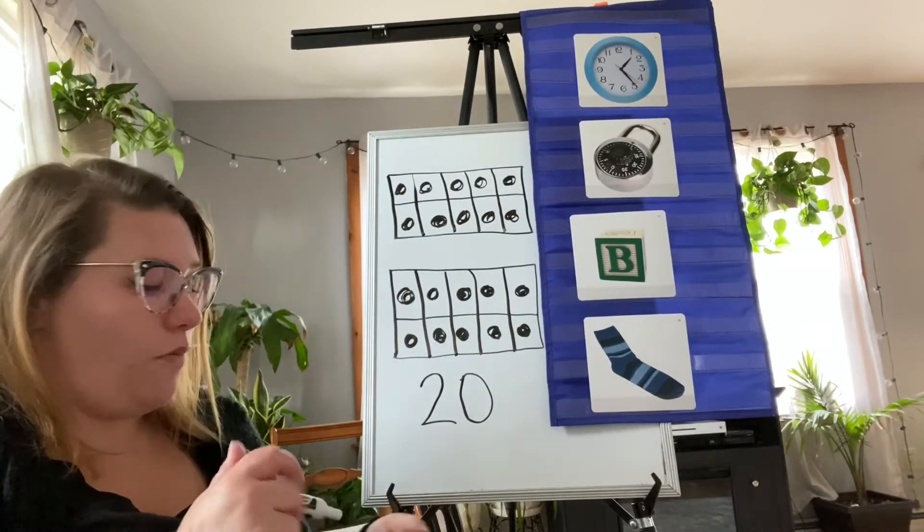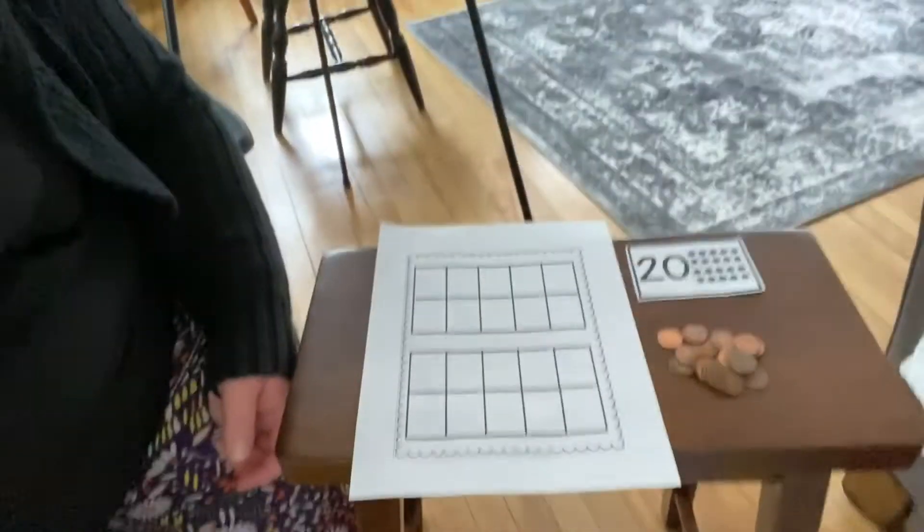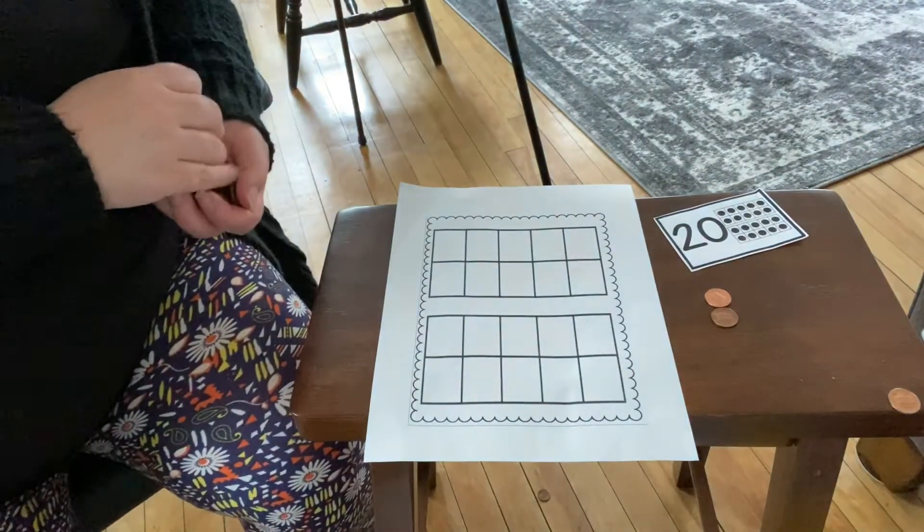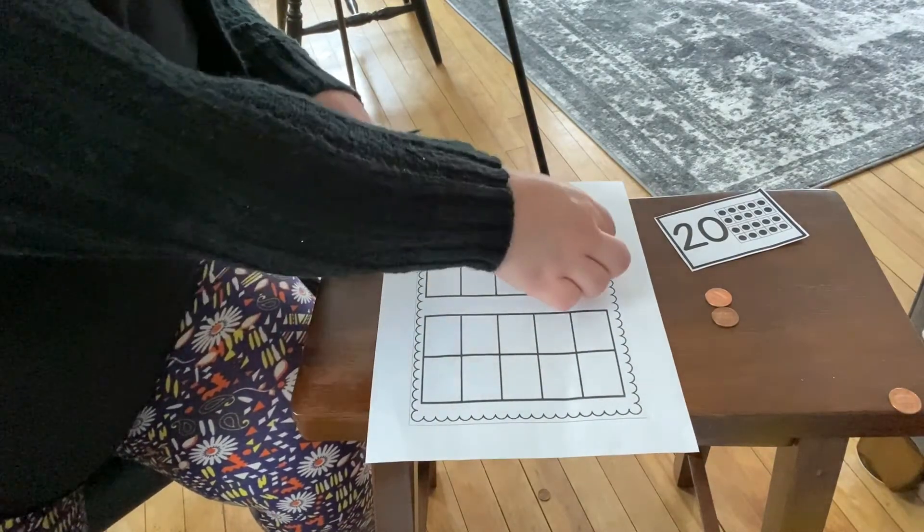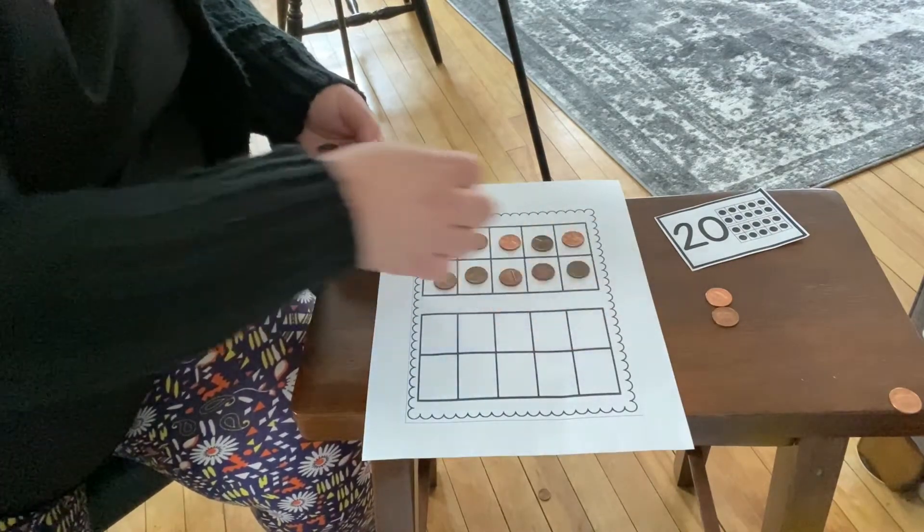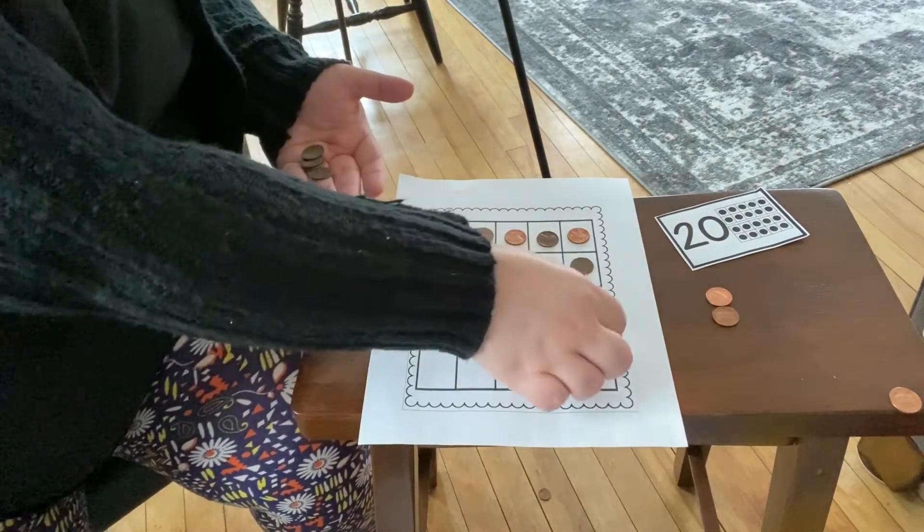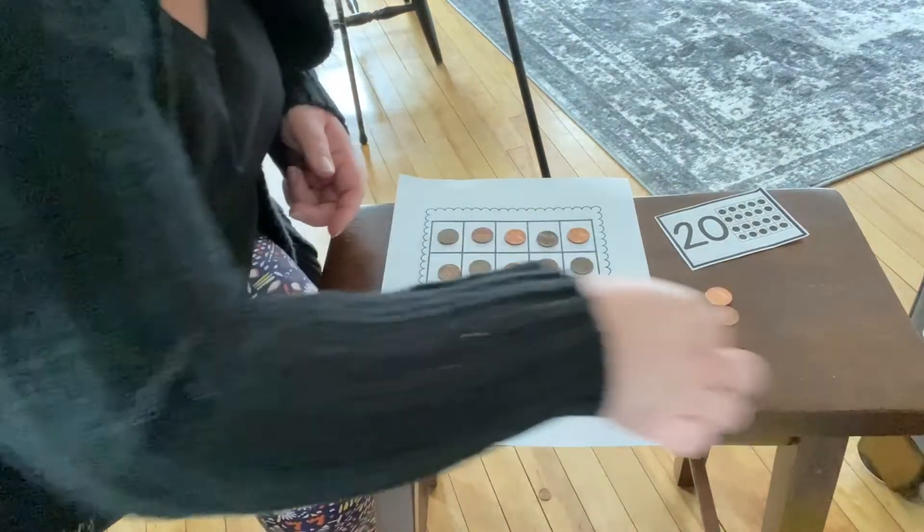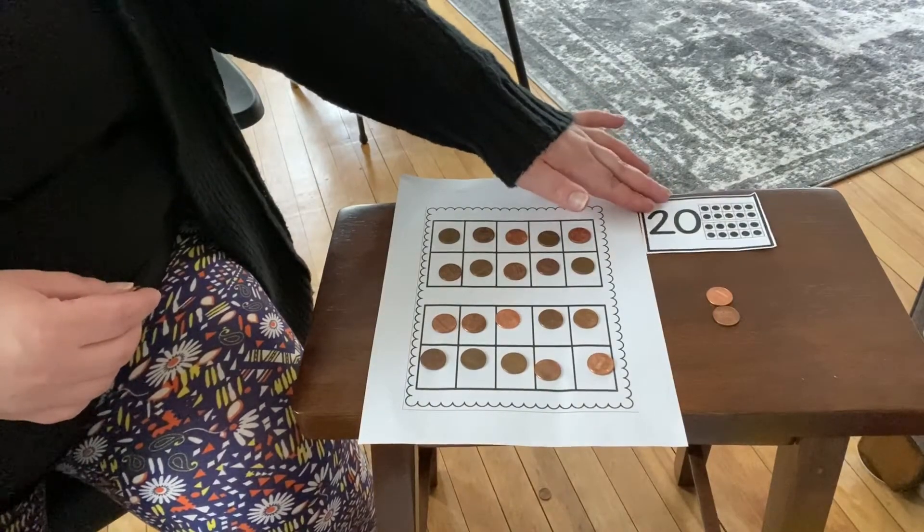All right, now we're gonna build 20 on our double 10 frame. Let's count. Oh, all my pennies fell! Hopefully I still have 20. Ready? Count with me. One, two, three, four, five, six, seven, eight, nine, ten. Eleven, twelve, thirteen, fourteen, fifteen, sixteen, seventeen, eighteen, nineteen, twenty. We have two full 10 frames and that is 20.